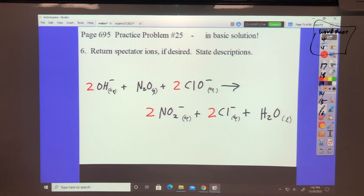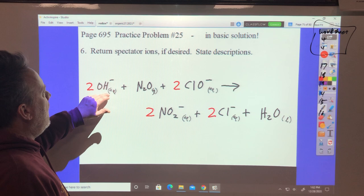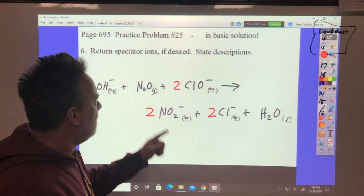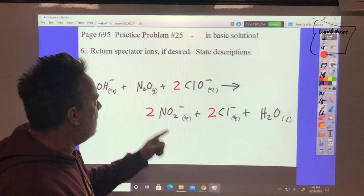Then it goes back in the spectator ions. But we don't have any. They didn't tell us what they were. So probably something like sodium or potassium. And you add state descriptions. Which ones are gas, which ones are aqueous, etc. Which ones are liquid. And N2O is gas there. One more I think. And this video was the C video. The next one should be the D video.